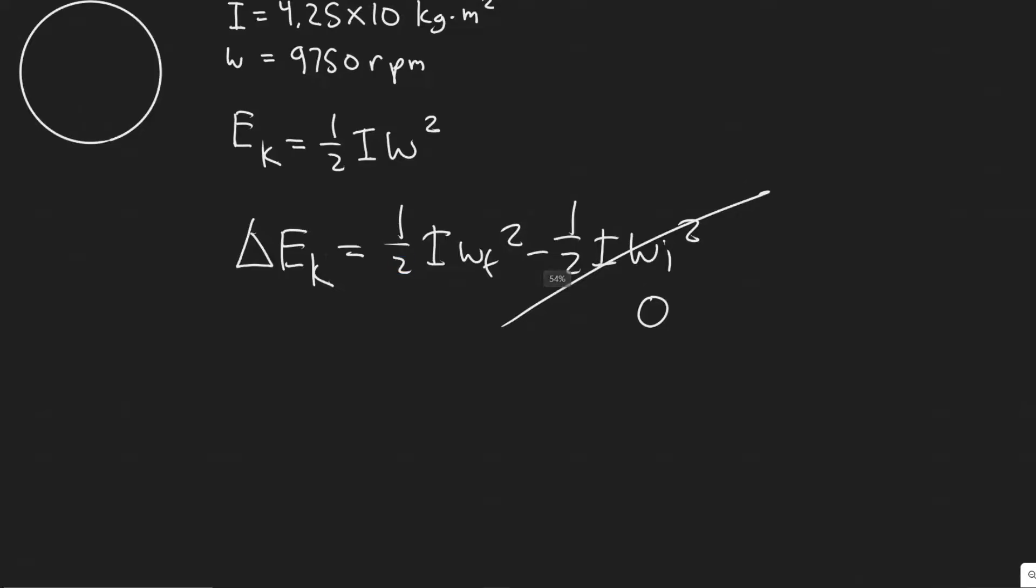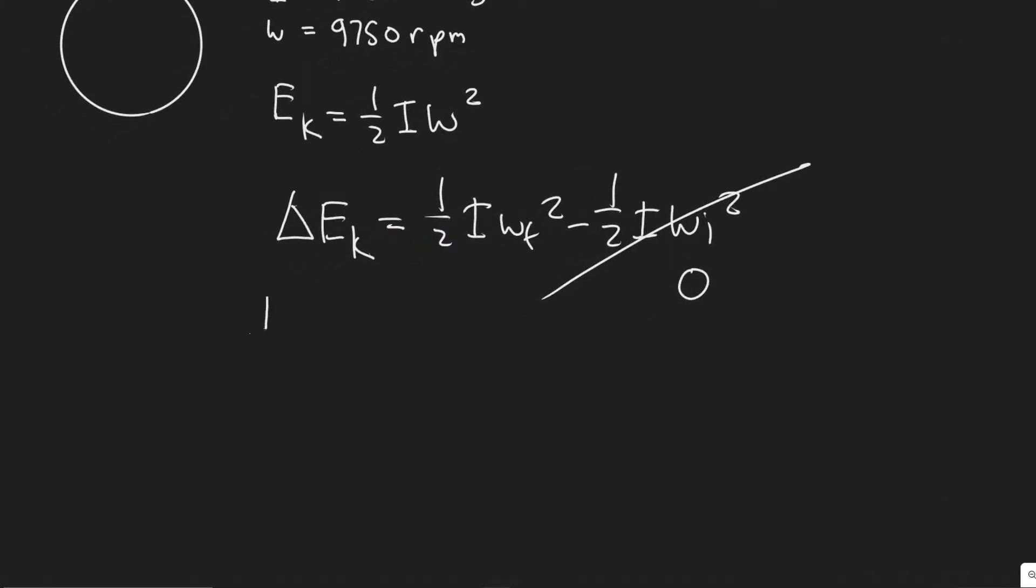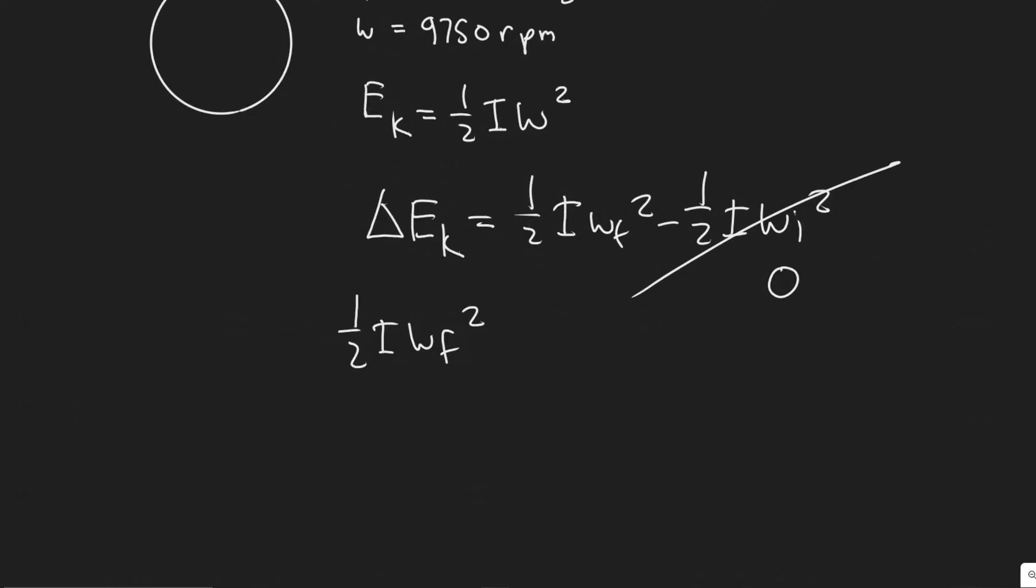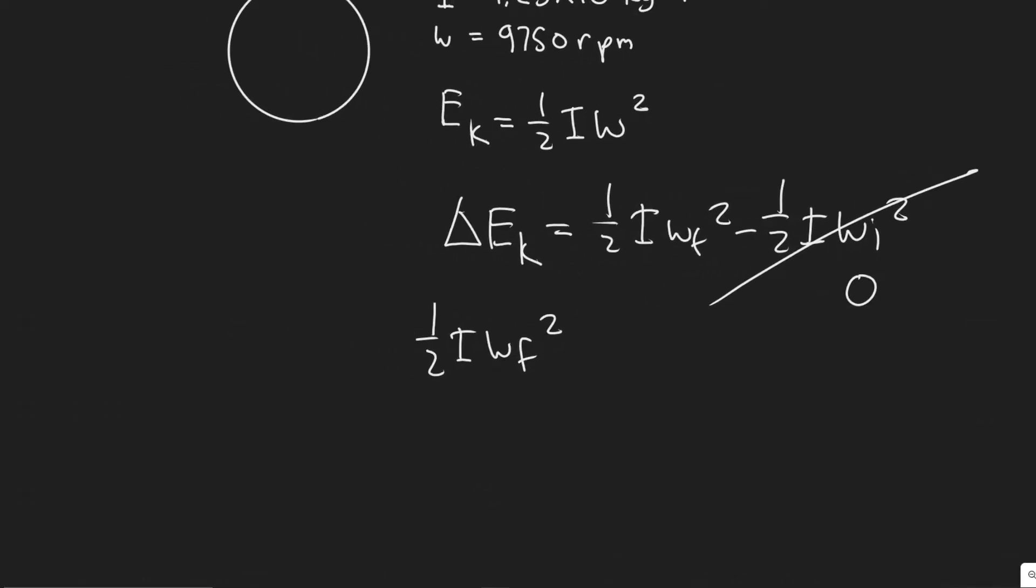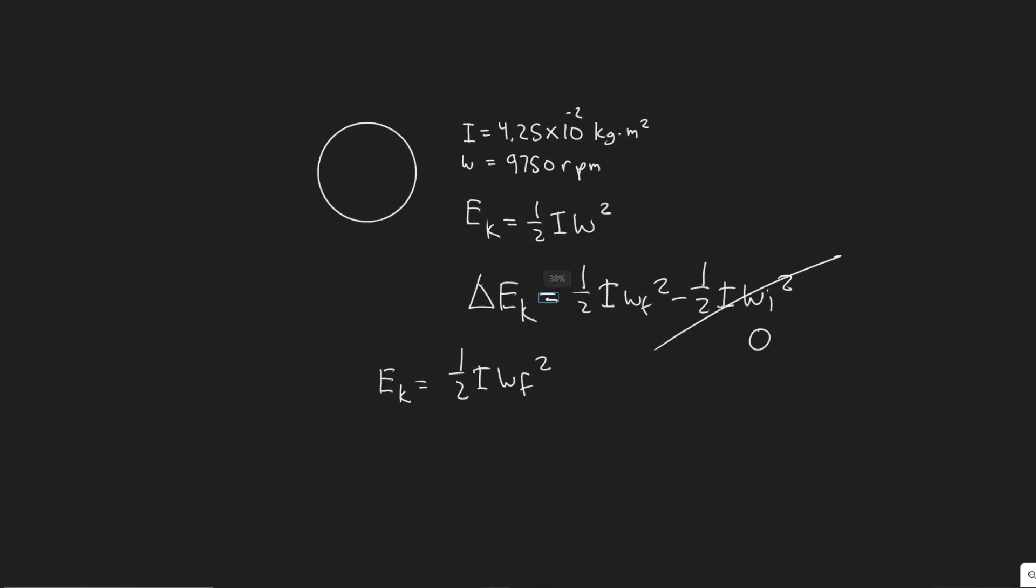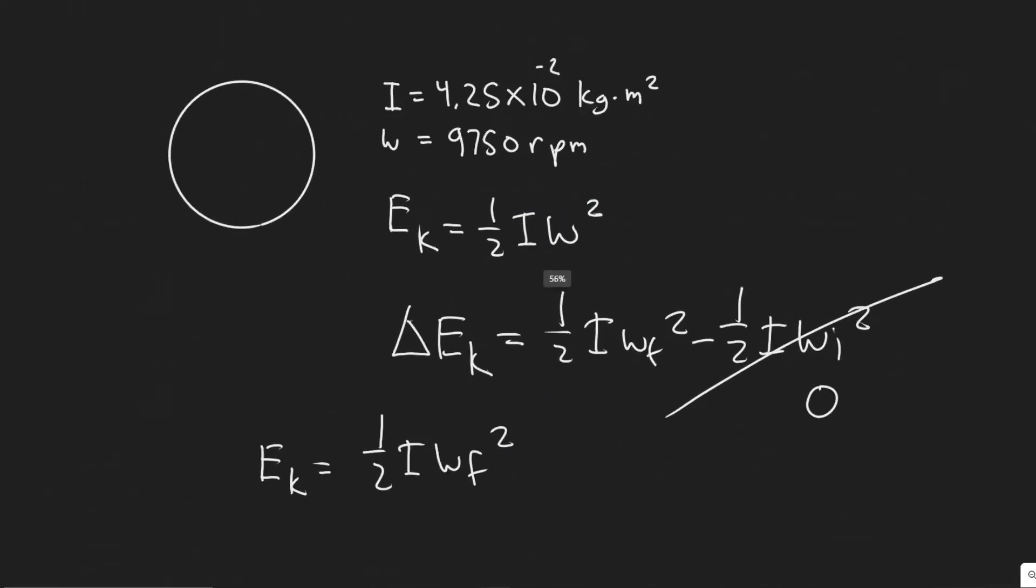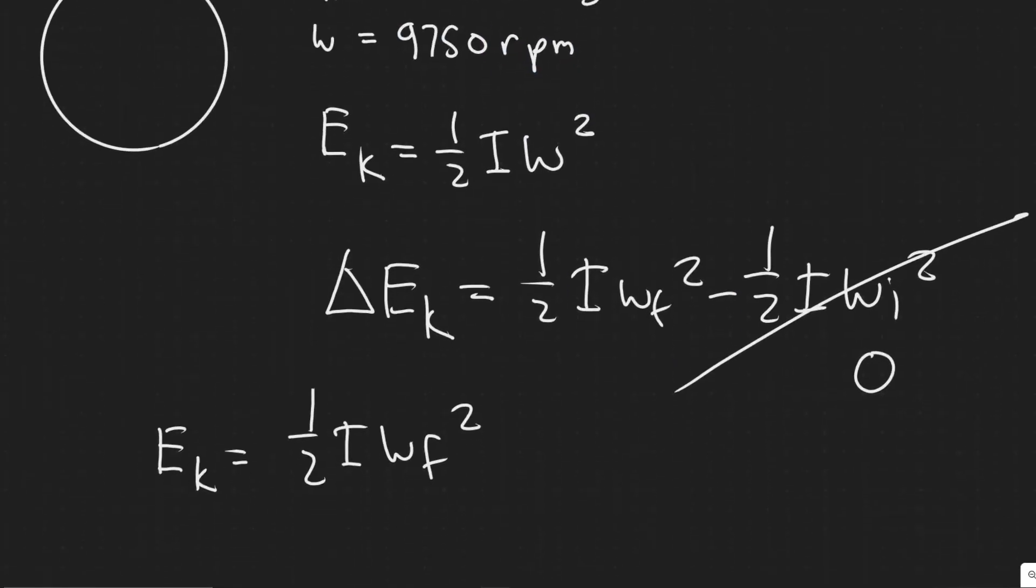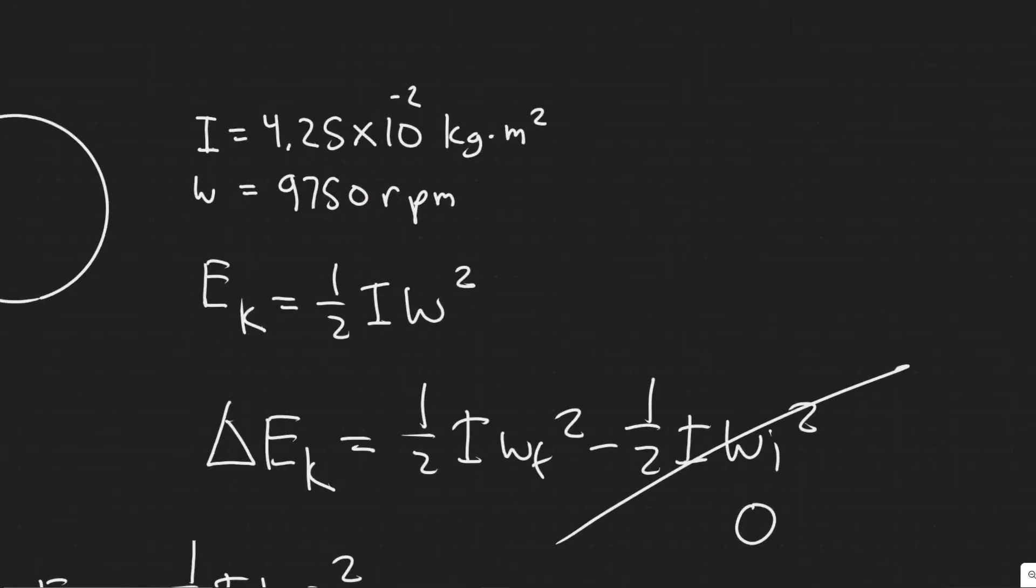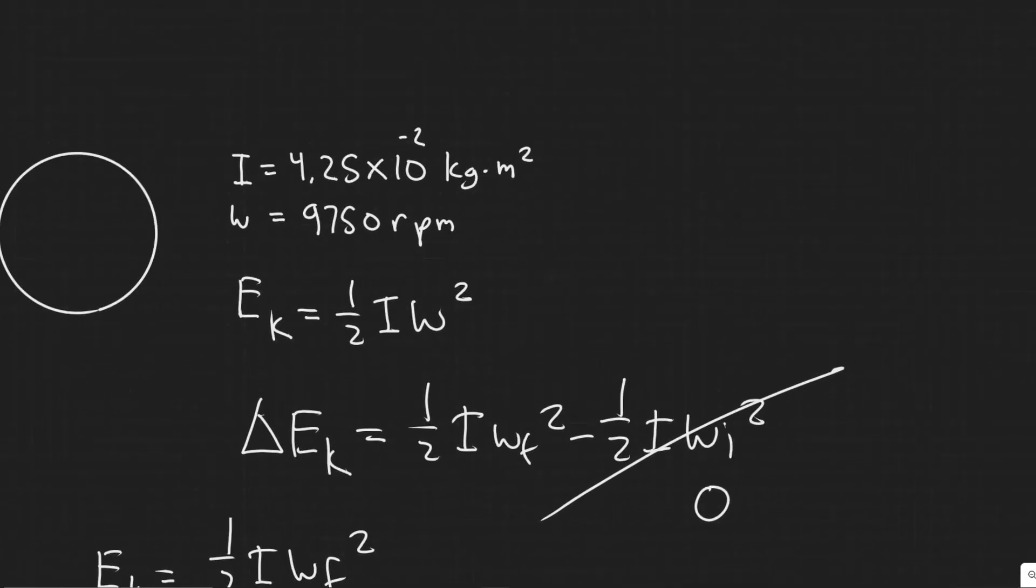is just one-half inertia times angular velocity squared, where the angular velocity is what we're trying to get it up to. It's really just a matter of plugging into this formula. But when we do this, we need to make sure it's the right units. You have to have this in radians per second when you plug it in, not revolutions per minute. So you need to make that conversion.